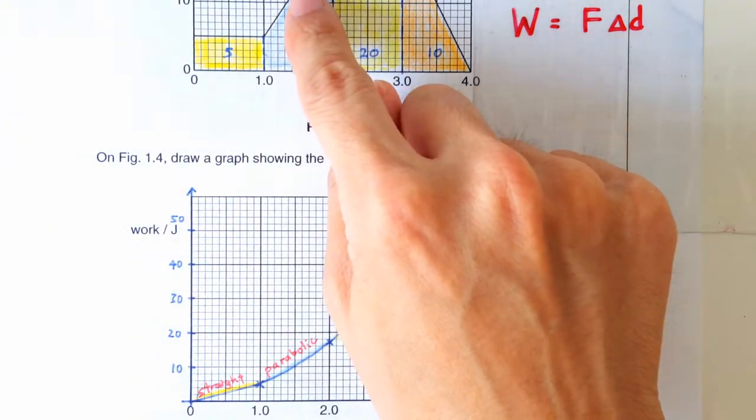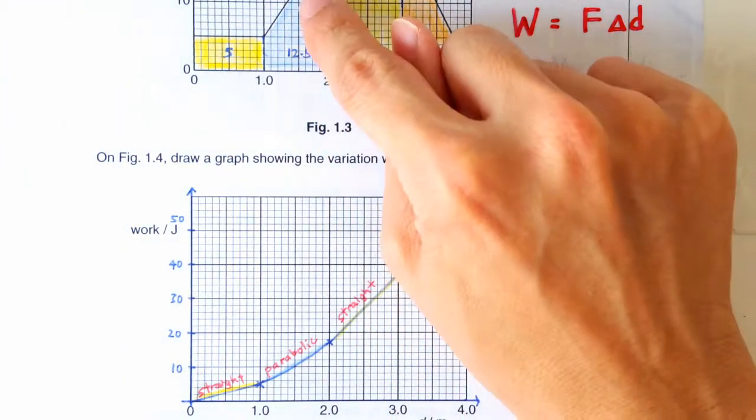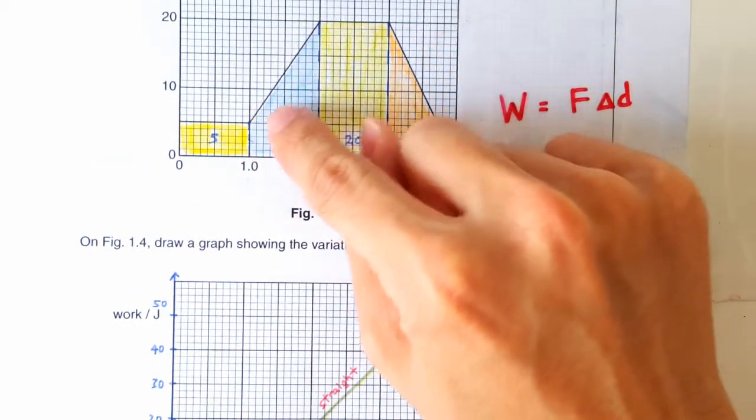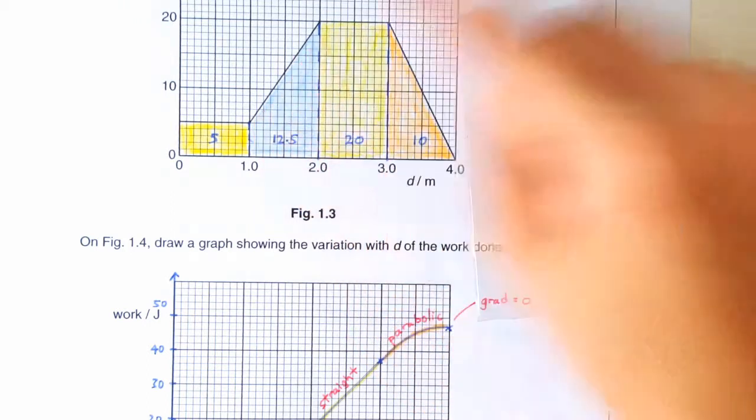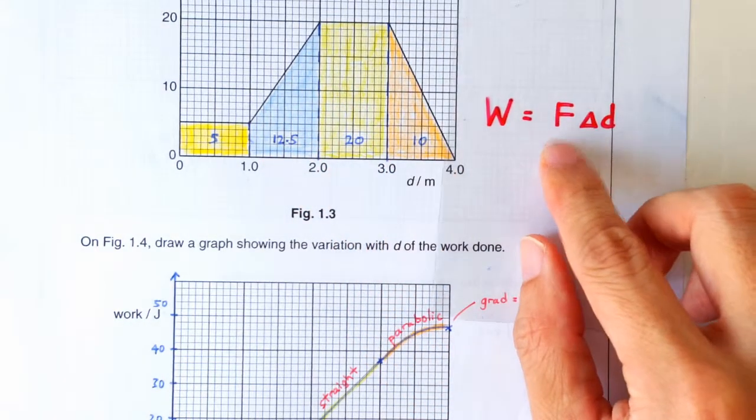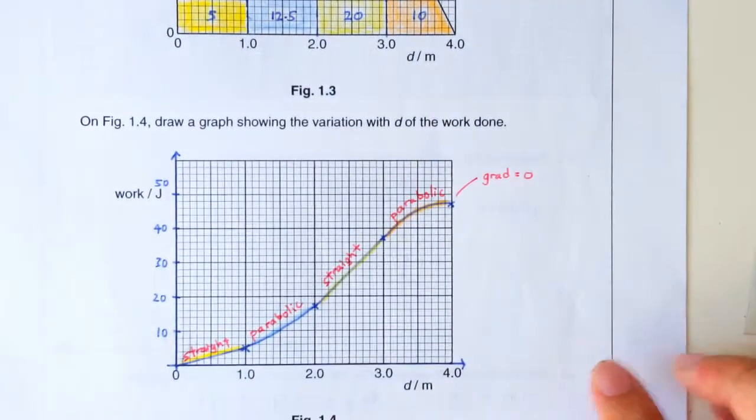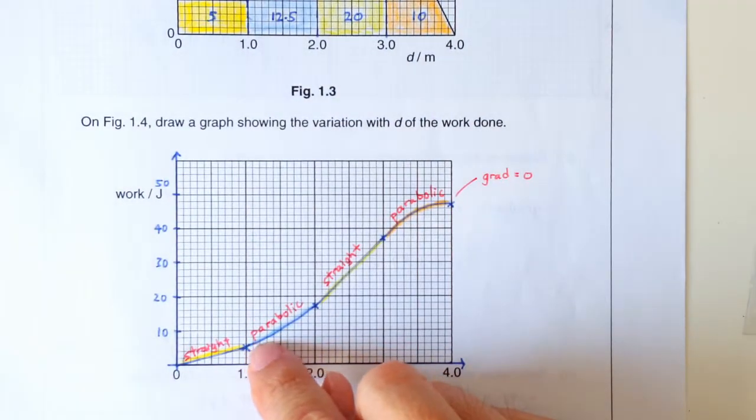The more troublesome ones are here and here because the force is not constant. So along this segment, you are doing work at a faster and faster rate. Because the force is increasing, right? So you are doing work at a faster and faster rate. So the curve you draw here should show a steeper and steeper gradient.